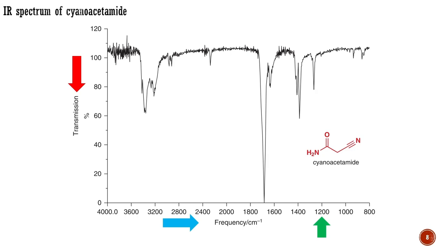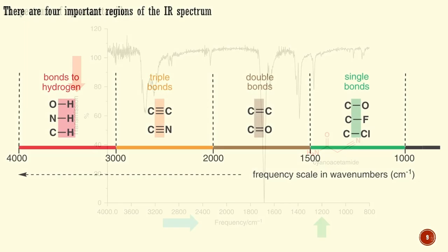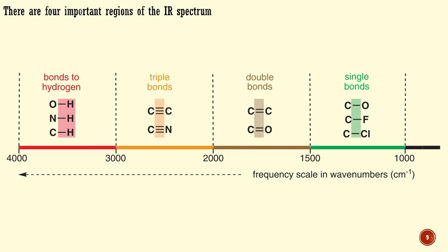Carbon–carbon and carbon–oxygen double bonds appear around 2,000 to 1,500, and at the right-hand end of the spectrum come single bonds, below 1,500. Looking back at the spectrum of cyanoacetamide, we see peaks in the X–H region at about 3,600 and 3,200, which are the N–H and C–H stretches of the amino and CH2 groups. The one rather weak peak in the triple bond region is the nitrile group, and the strong peak at about 1,670 belongs to the carbonyl group. The rest of the spectrum is in the single bond region — not normally interpreted in detail, but characteristic of the compound as a whole, rather in the way that a fingerprint is characteristic of an individual human being. It is therefore called the fingerprint region.